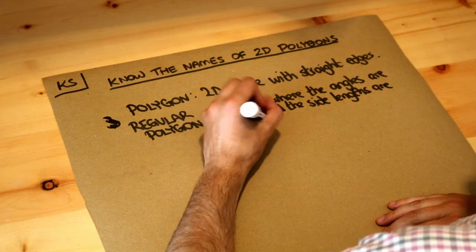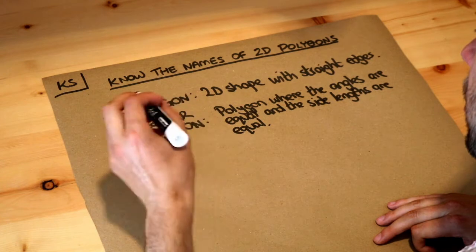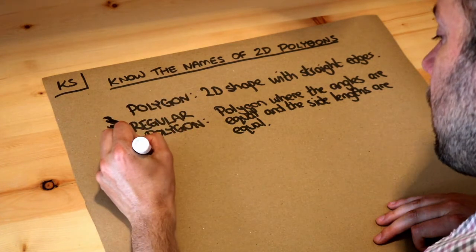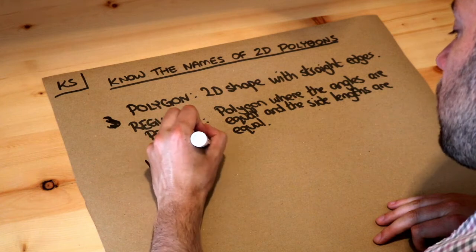And if the angles or the lengths are not the same then it's known as an irregular polygon, spelt irregular like this. So that just means a polygon which is not regular.